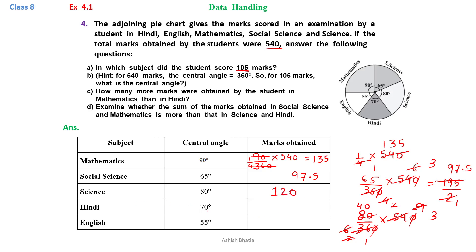Then we can calculate marks in Hindi. That will be 70 divided by 360 into 540. Same goes here. 9 4s are 36, 9 6s are 54, 2 2s are 4, 2 3s are 6, 2 1s are 2, 2 35s are 70. 35 into 3, that will be 105 marks in Hindi.